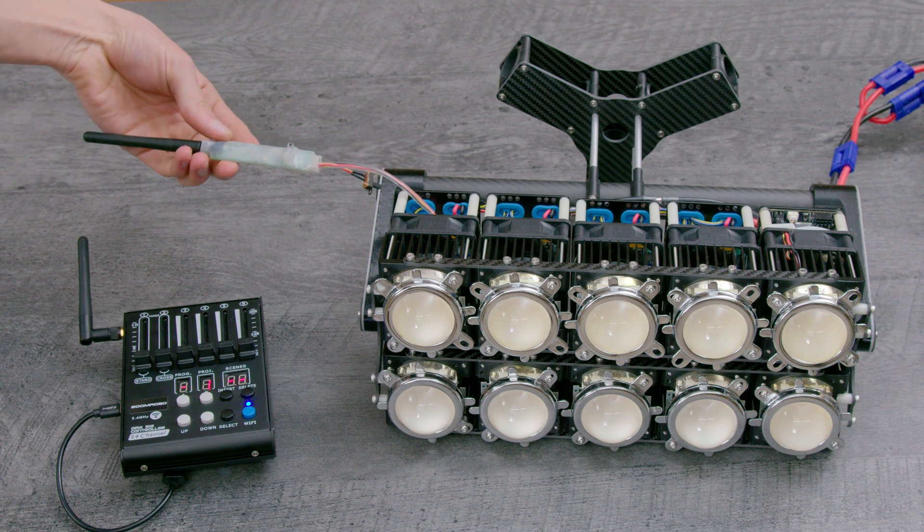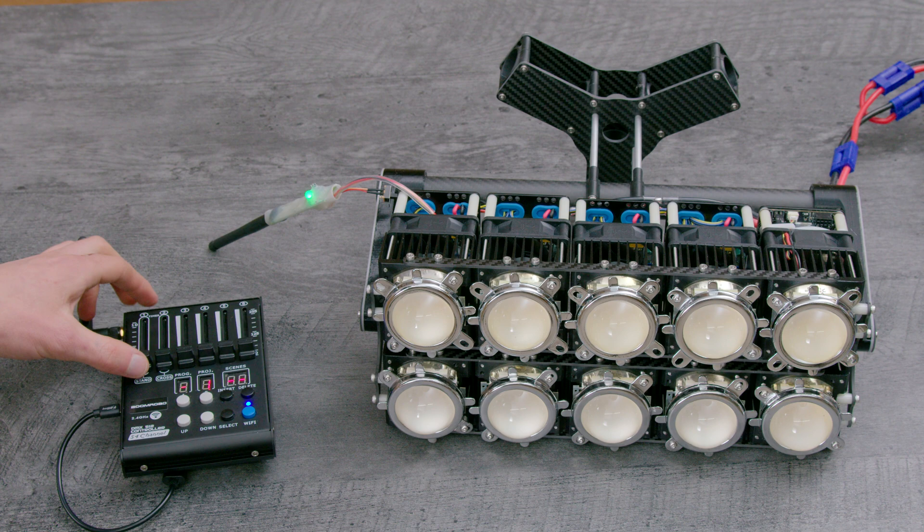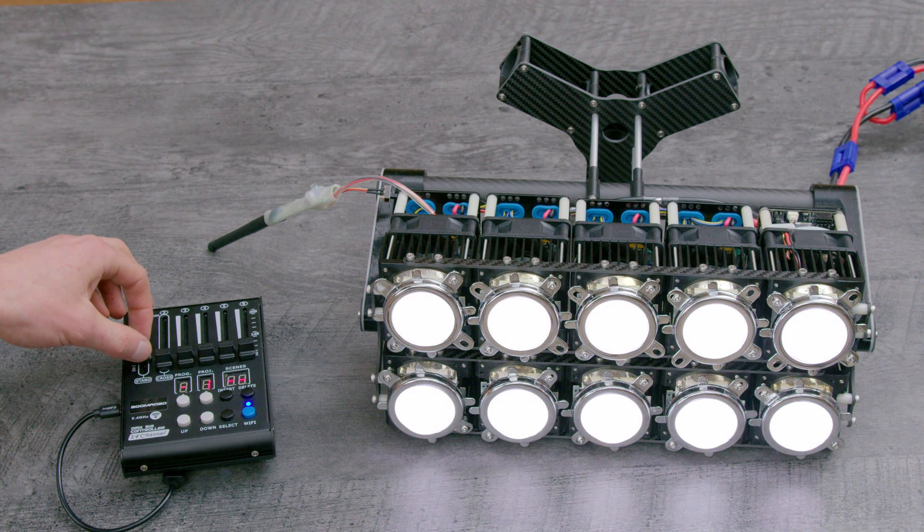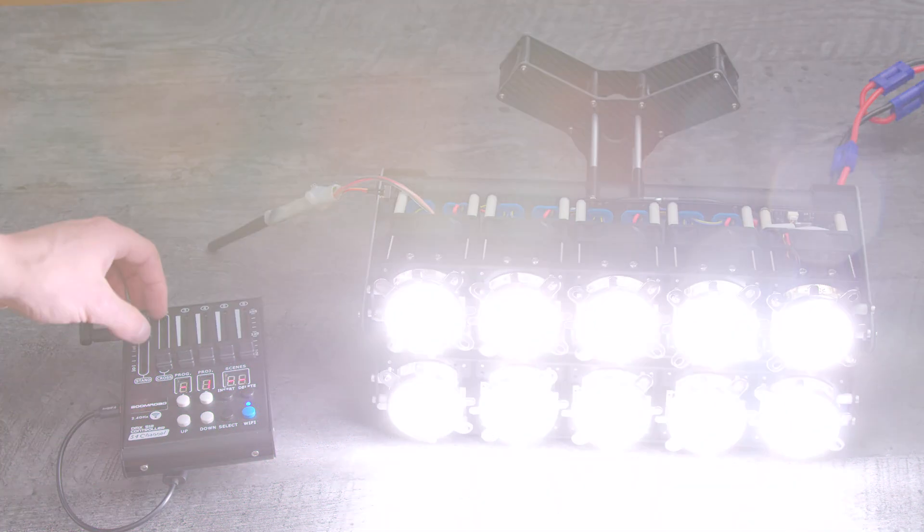If the DMX channels on each module were to be set to unique values like 1 through 10, each one would be individually controllable from the console. But currently, each module is on channel 1, so they're all controllable as one DMX fixture.